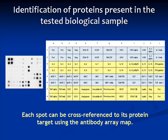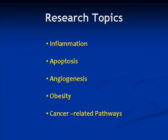The number of cytokines detected by an antibody array is typically between 10 and 100. RayBiotech has developed several themed antibody arrays focused on important research topics, including inflammation, apoptosis, angiogenesis, obesity, and cancer, just to name a few. For more information about arrays designed for specific research fields, please visit our website.